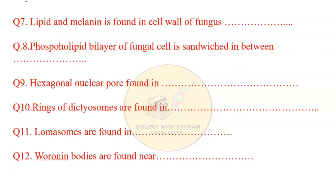The next question is: lipid and melanin are found in which layer of the cell wall of fungi? This was a very important question. The answer is the army layer.